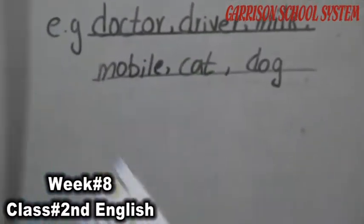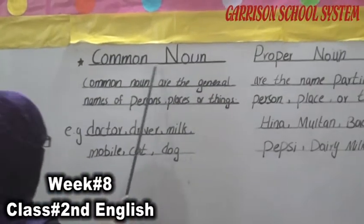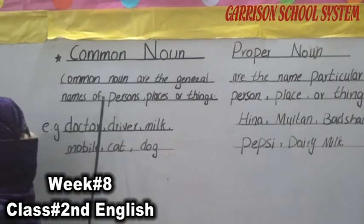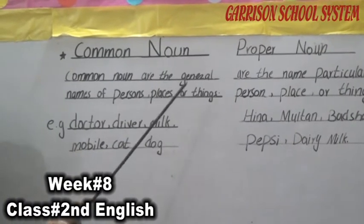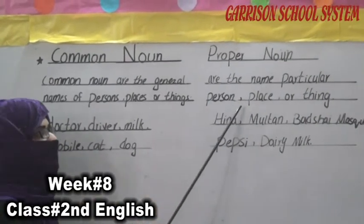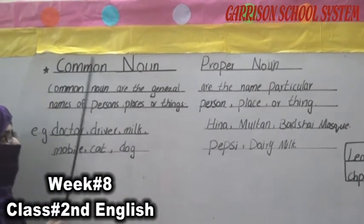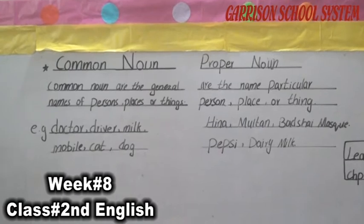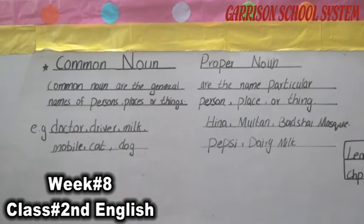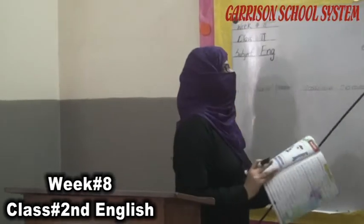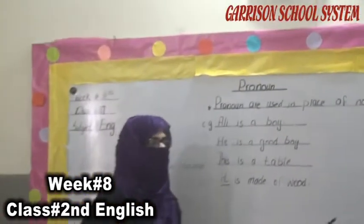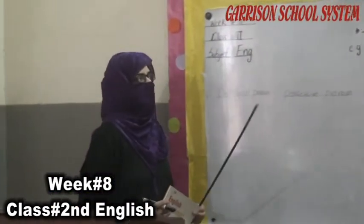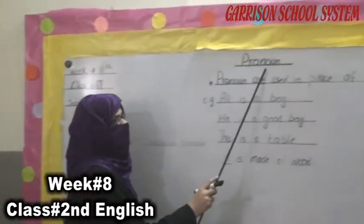Now we will learn about a new chapter which is about the pronoun. You have to remember the two things about common noun and proper noun: common nouns are general names and proper nouns are the particular names of a place, person, or thing. Our next topic is about pronoun.